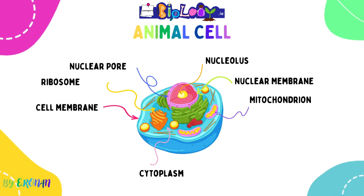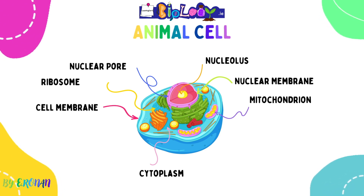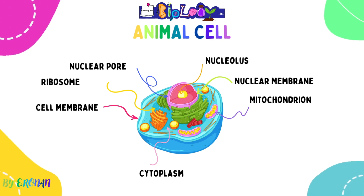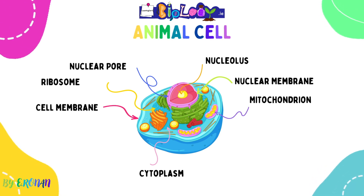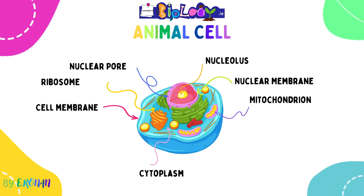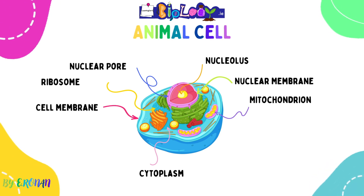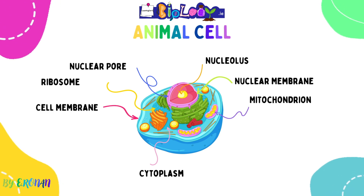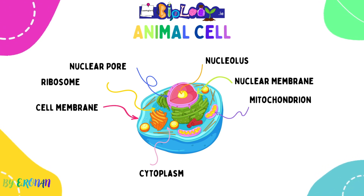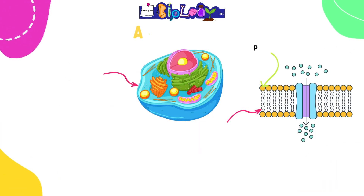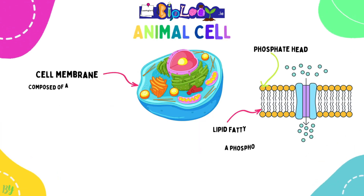Now we're moving on to the structure and diagram of our animal cell. All of these structures also occur in the plant cell, but the plant cell does have a few more. You are required to draw both a plant and an animal cell, know all of the functions of these parts, label them, and distinguish between the two. We don't call them structures, we call them organelles.